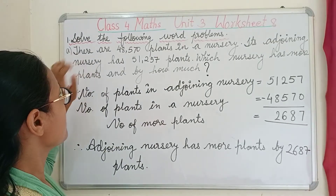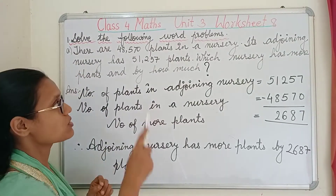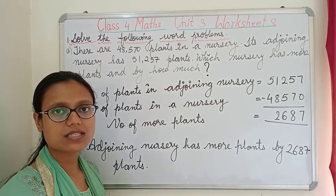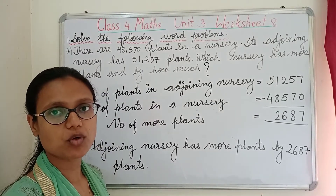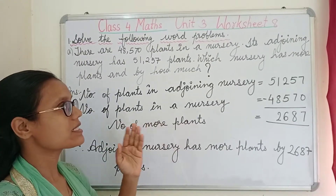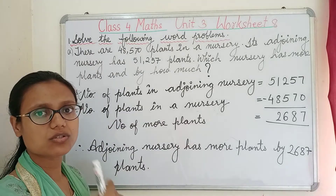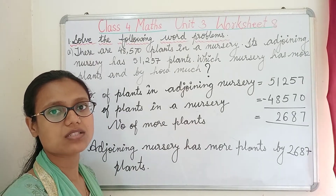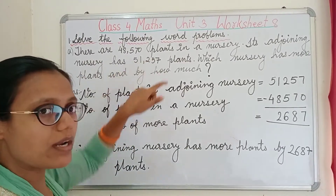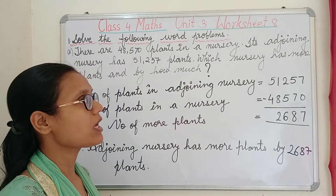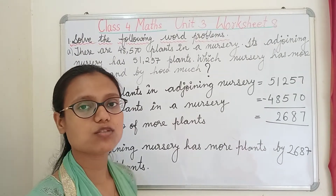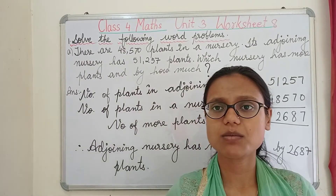The first question: there are 48,570 plants in a nursery. In an adjoining nursery, 51,257 plants were there. Which nursery has more plants and by how much?